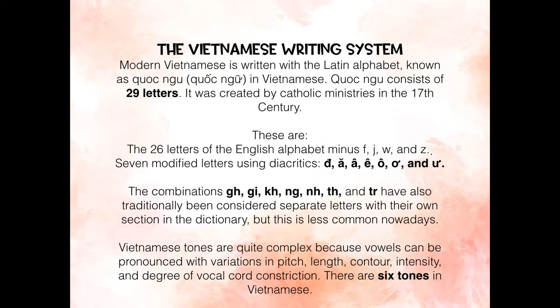Quốc Ngữ uses the 26 letters of the English alphabet minus F, J, W, and Z, plus seven modified letters. The combinations GH, GI, KH, NG, NH, TH, and TR have also traditionally been considered separate letters with their own section in the dictionary, but this is less common nowadays. Vietnamese tones are quite complex because vowels can be pronounced with variations in pitch, length, contour, intensity, and degree of vocal cord constriction.